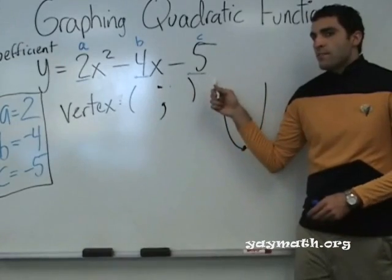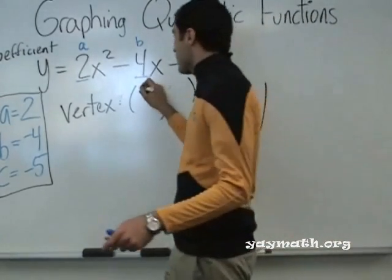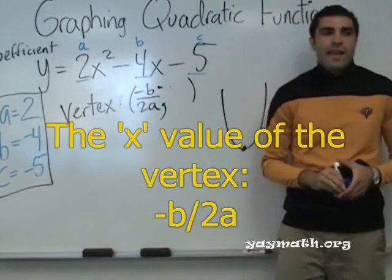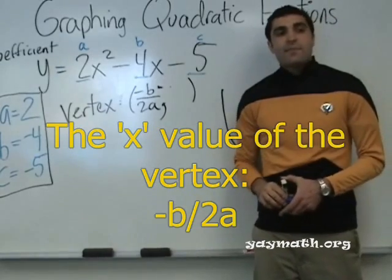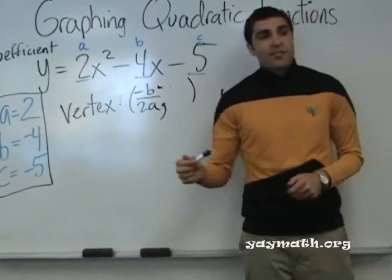And the value of this point has an x and a y. The x is, this is important, negative b over 2a. Negative b over 2a is the x value of the vertex, and we're going to do this together.